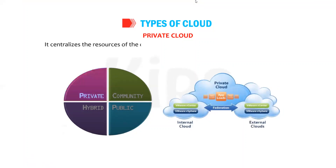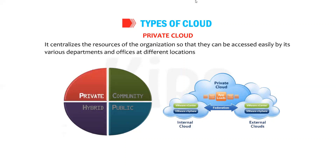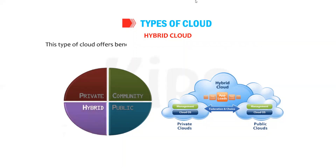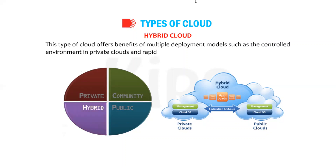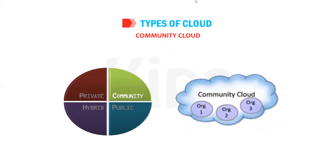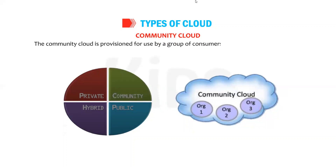The second type is the private cloud — a private cloud is owned and used by a single organization over a private network. It centralizes the resources of the organization so that they can be accessed easily by its various departments and offices at different locations. The third type is the hybrid cloud — a combination of both private and public cloud. It offers benefits of multiple deployment models, such as the controlled environment of private clouds and the rapid elasticity of public clouds.